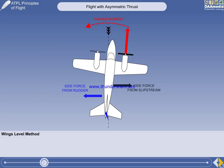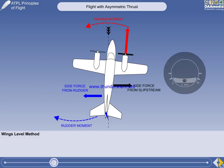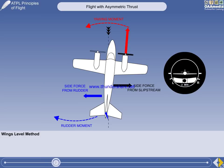Yawing towards the live engine gives a side-slip force on the keel surfaces behind the CG, opposite to the rudder. The turn indicator will be neutral, and the ball central. This paradox of asymmetric thrust — where the aircraft is side-slipping but the ball is in the middle — is the exception to the rule of balanced, coordinated flight.